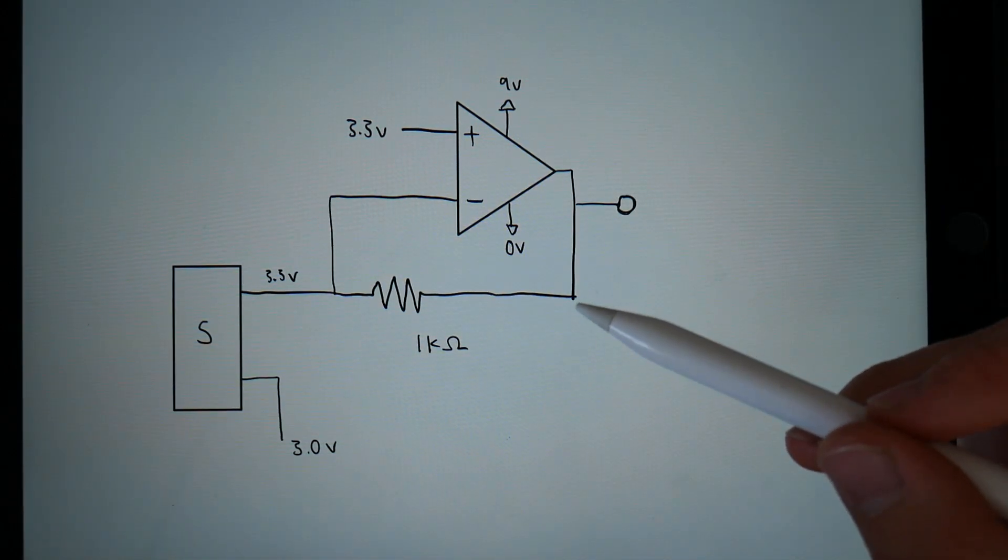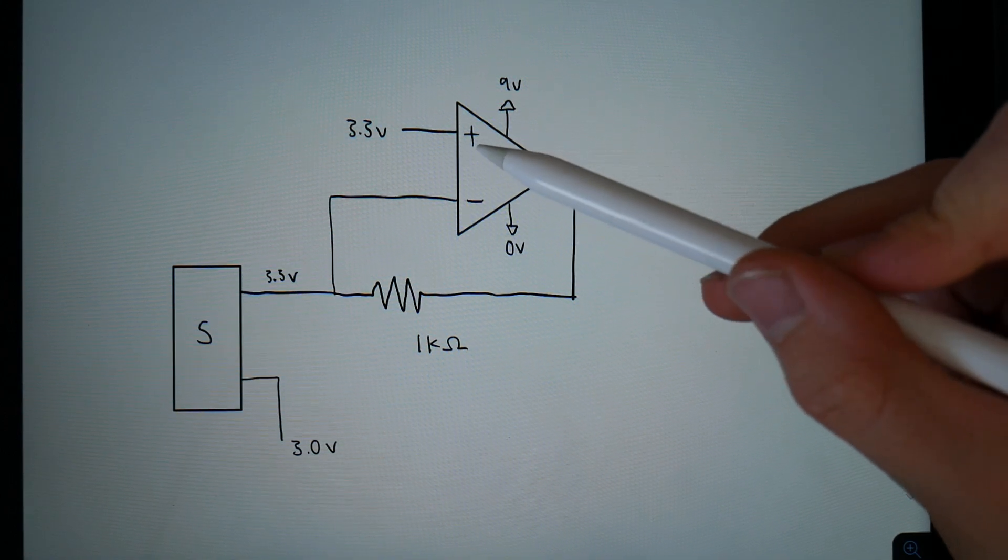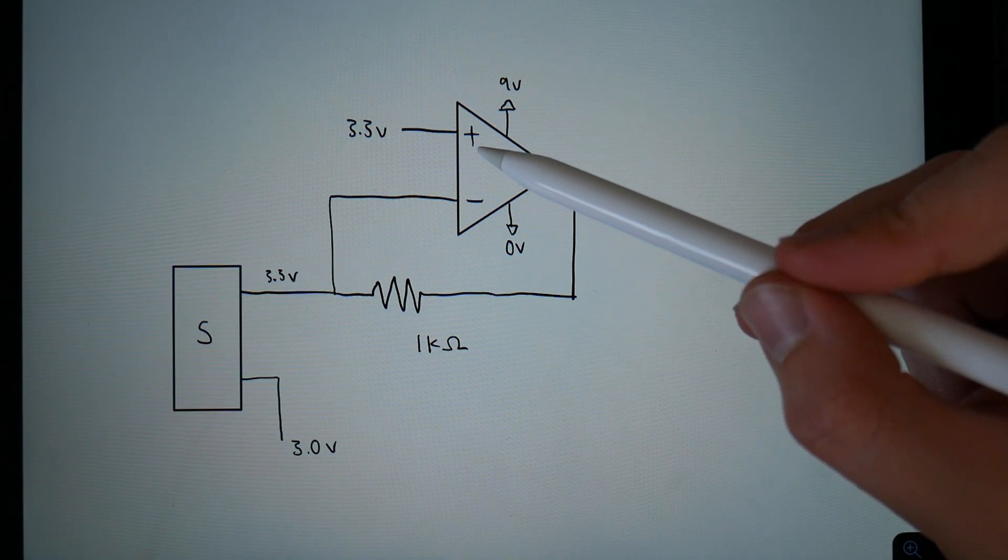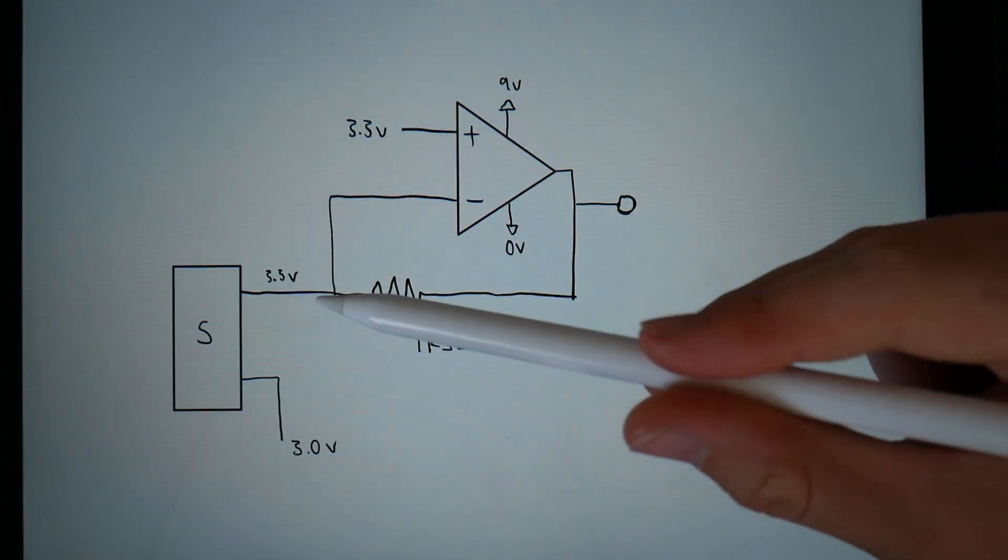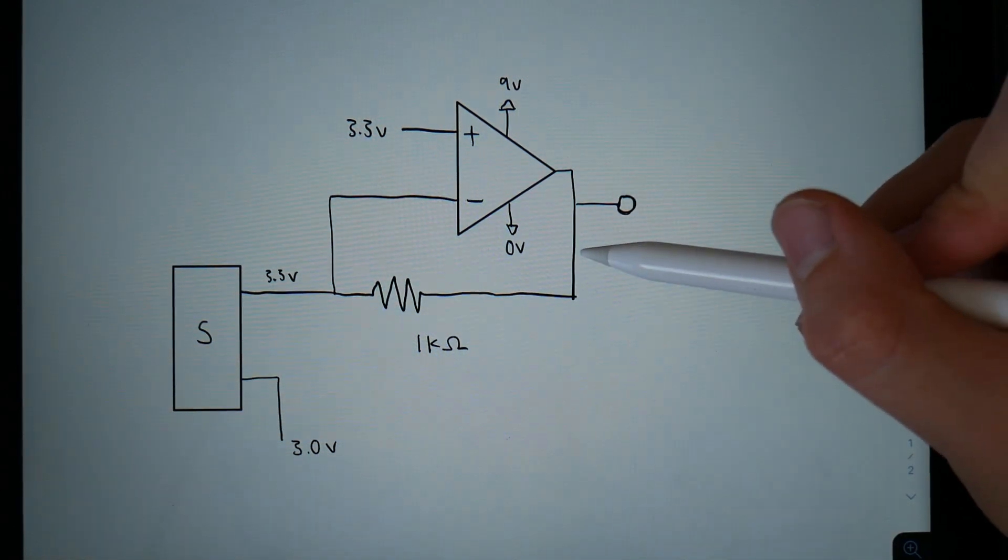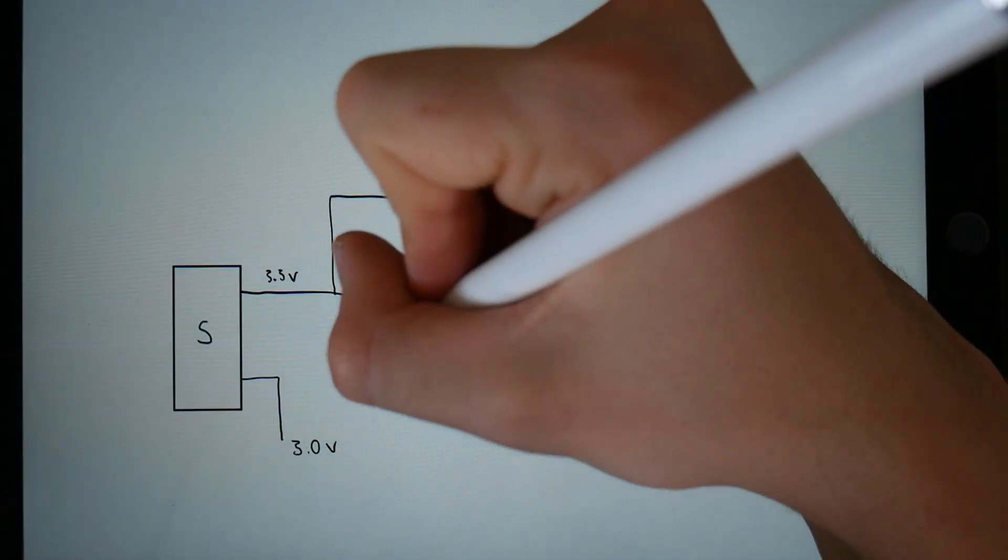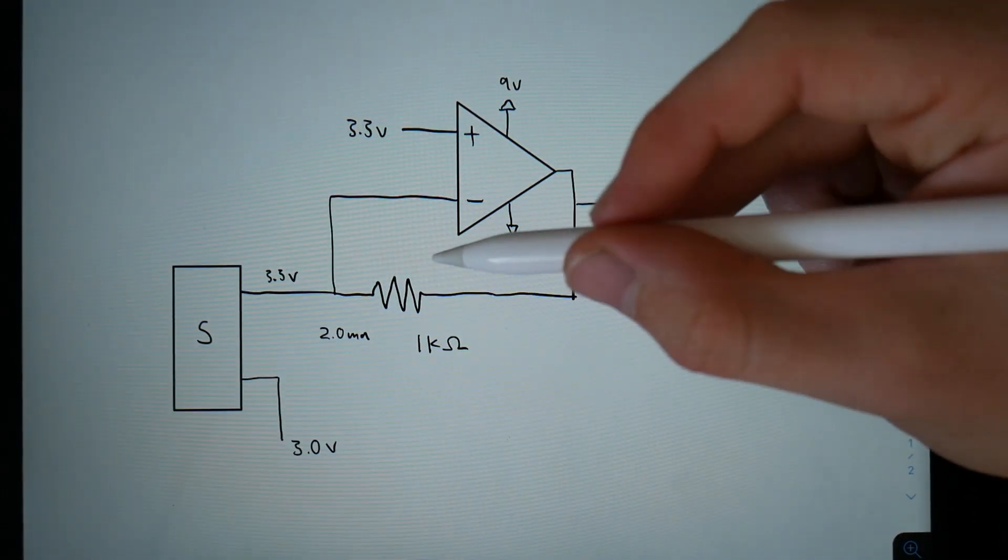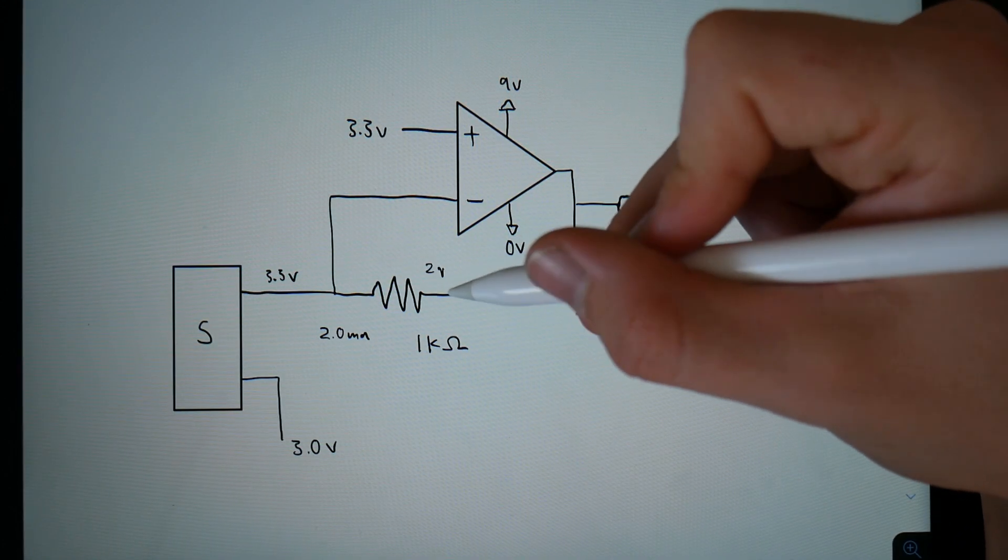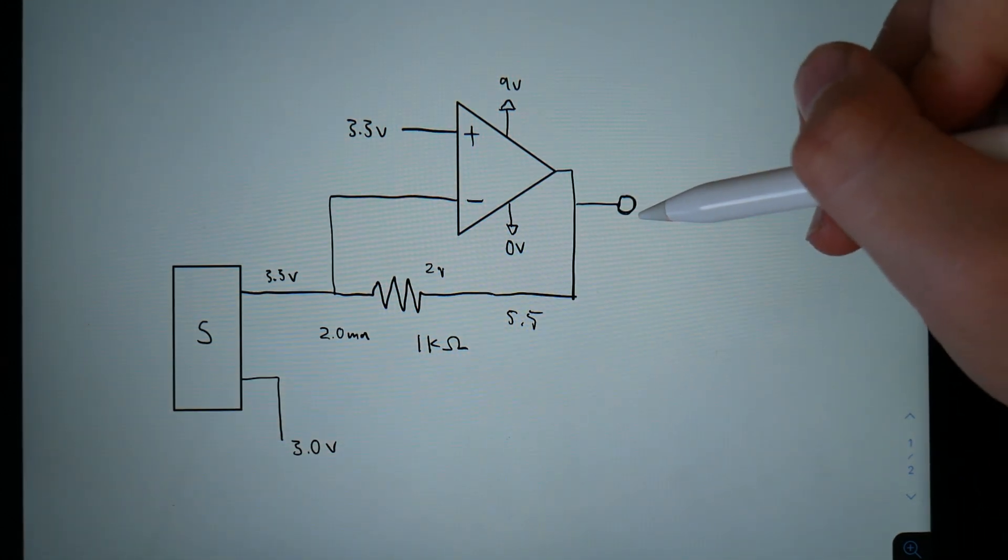So here is a slightly better circuit that only uses one op-amp and a properly sized resistor. We also have the inverting and non-inverting inputs labeled properly. So we have 3.3 volts on the non-inverting input. And this op-amp is going to try to keep this point at exactly 3.3 volts as well. And the voltage here will change depending on how much current this sensor is drawing. So for instance, let's say it's drawing 2 milliamps. That means the voltage drop across this resistor is approximately 2 volts, which means that this side is going to be 5.3 volts. So this op-amp is going to be outputting 5.3 volts.